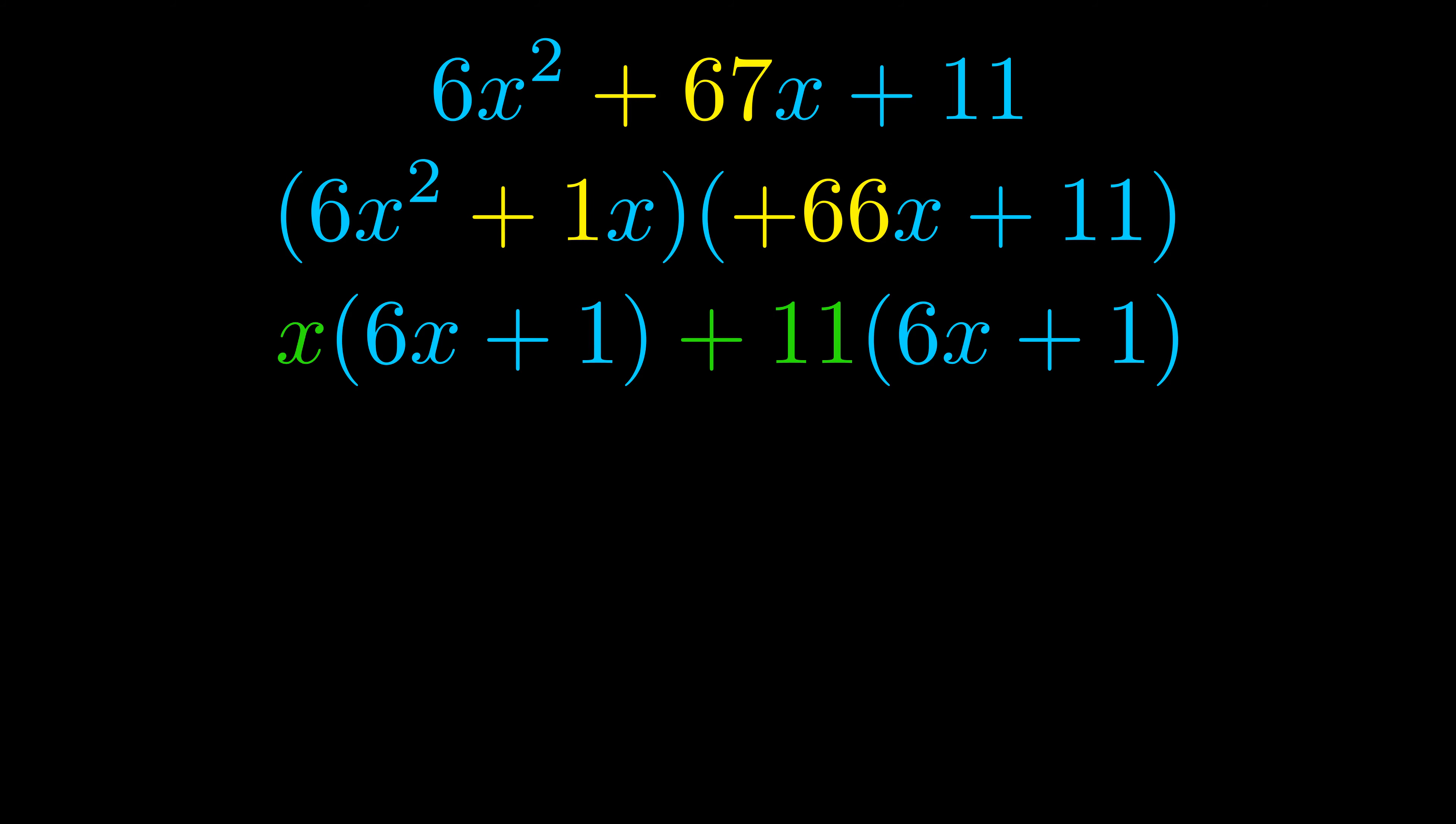Notice also how what remains inside of the parentheses is the same in both cases. The blue values are the same. Those blue values will become one of our factors, and we will combine the two green values, the GCFs that we pulled out, to get the other one.